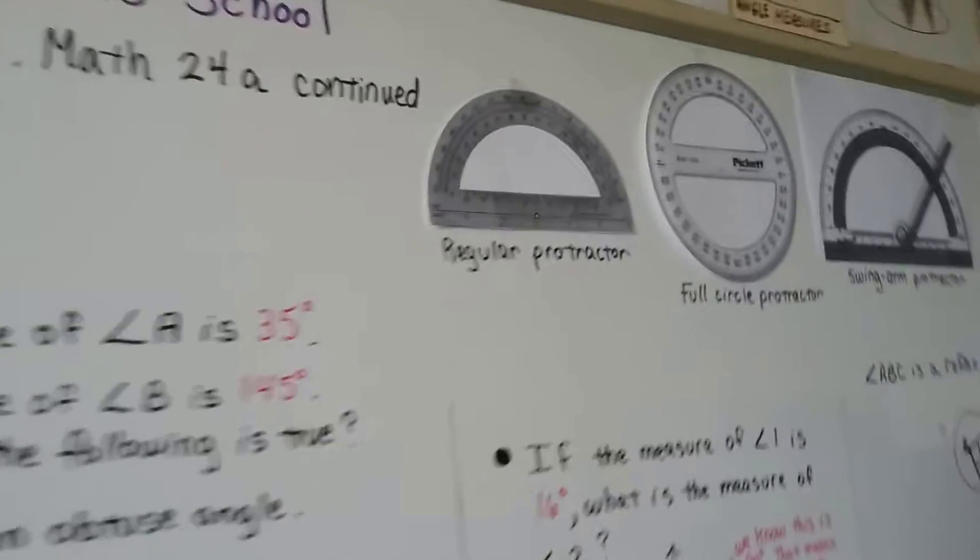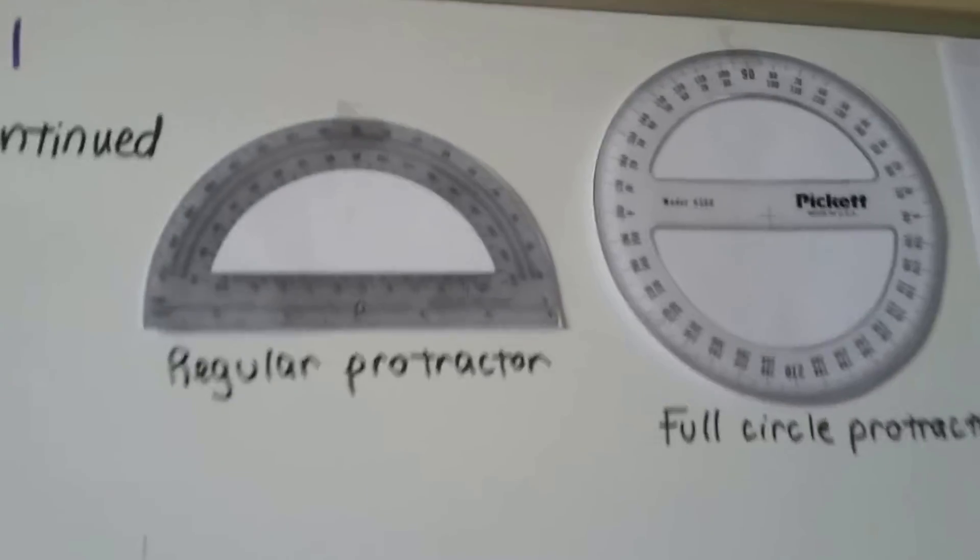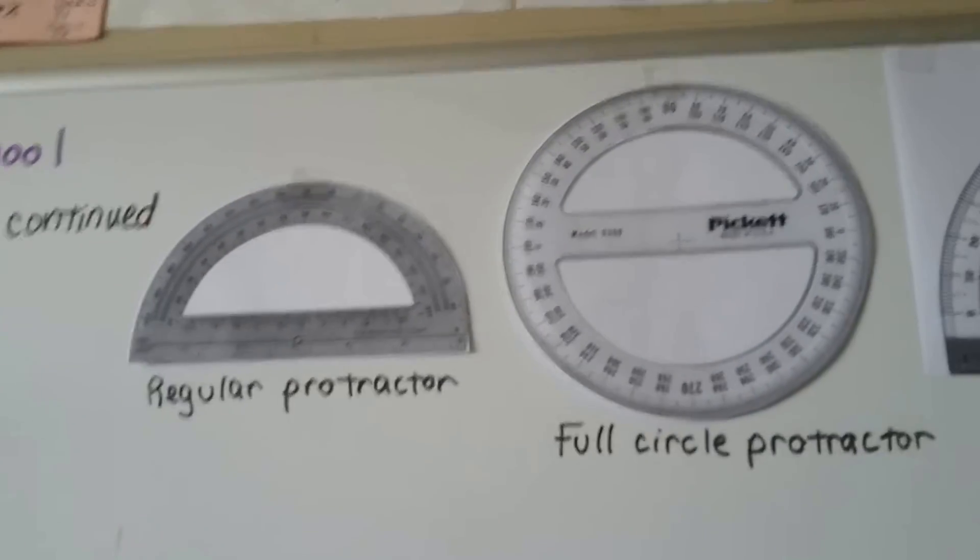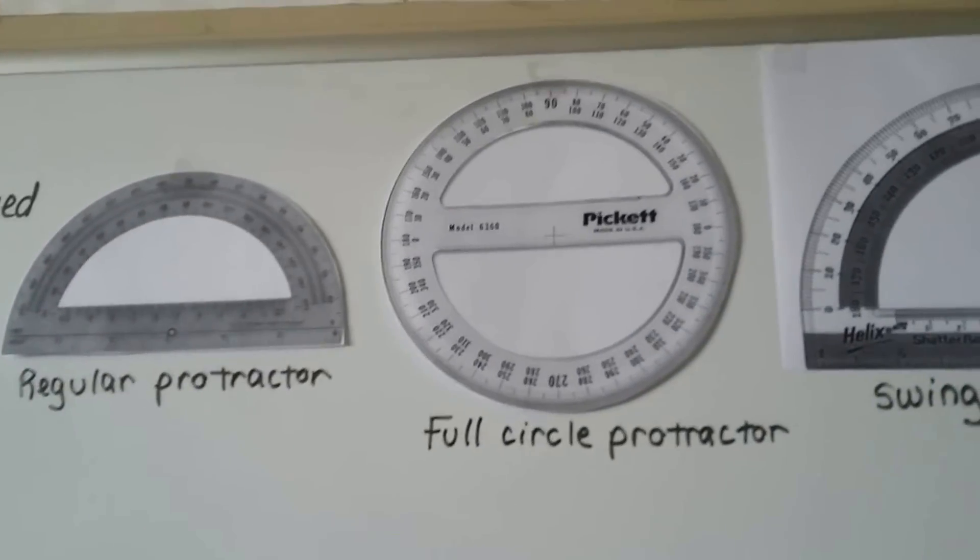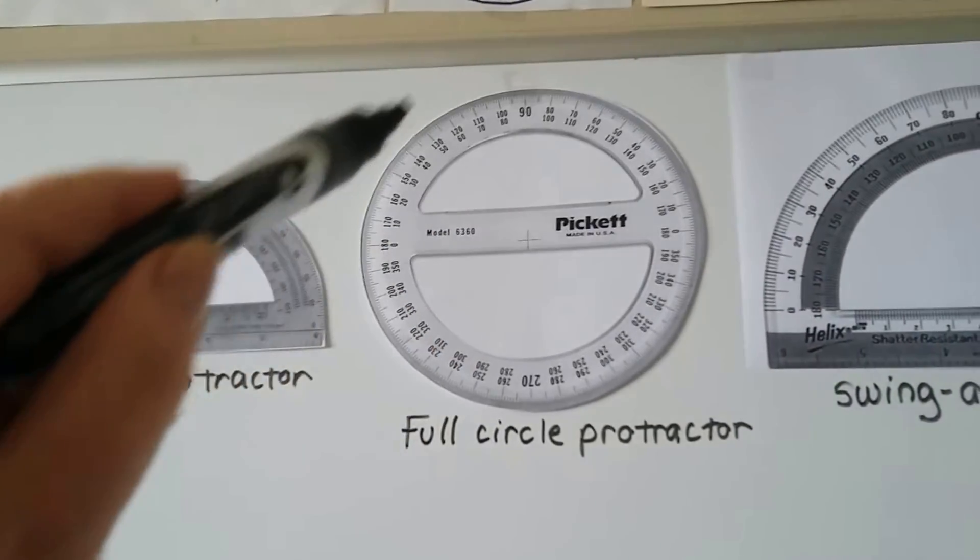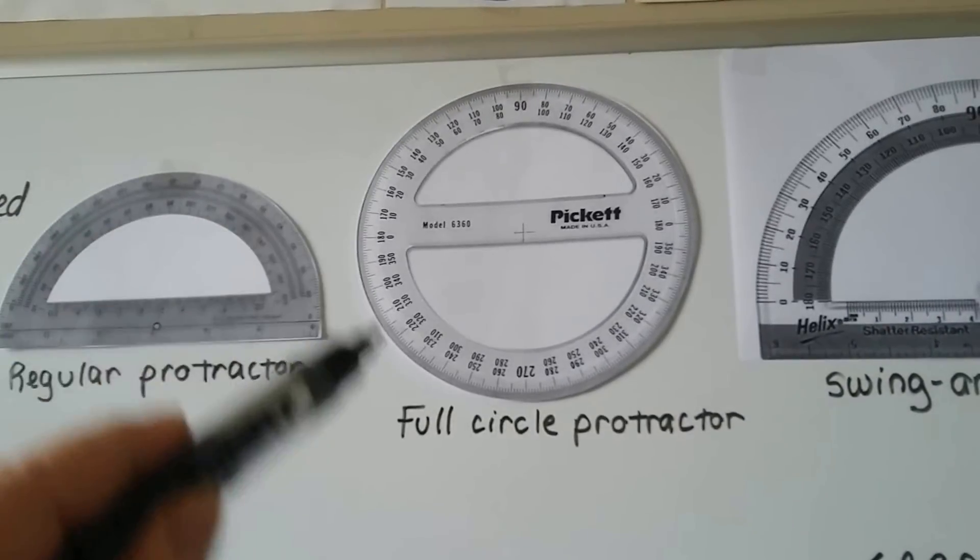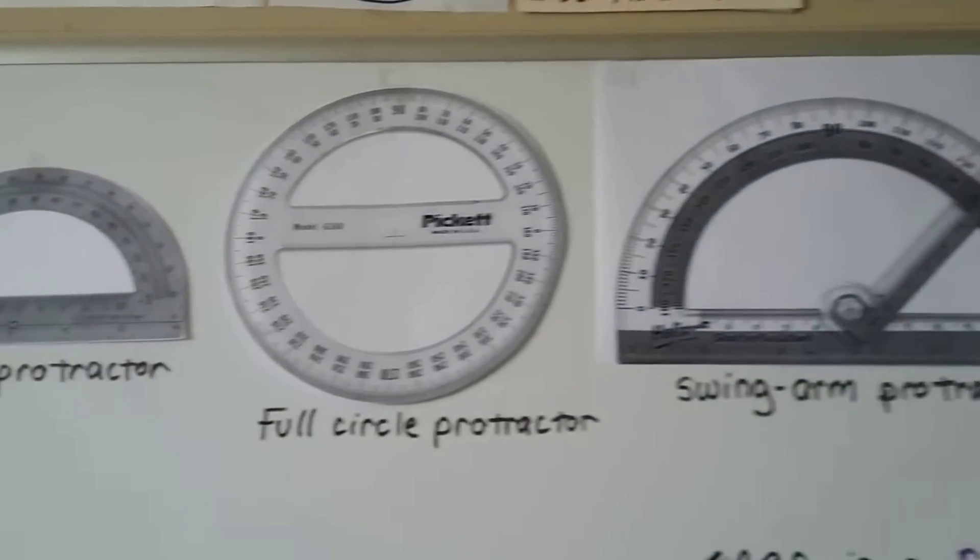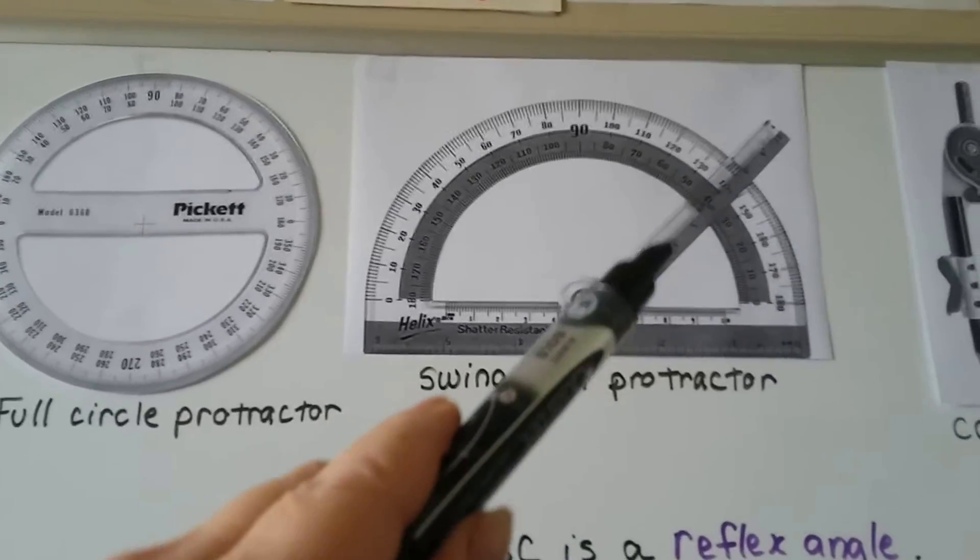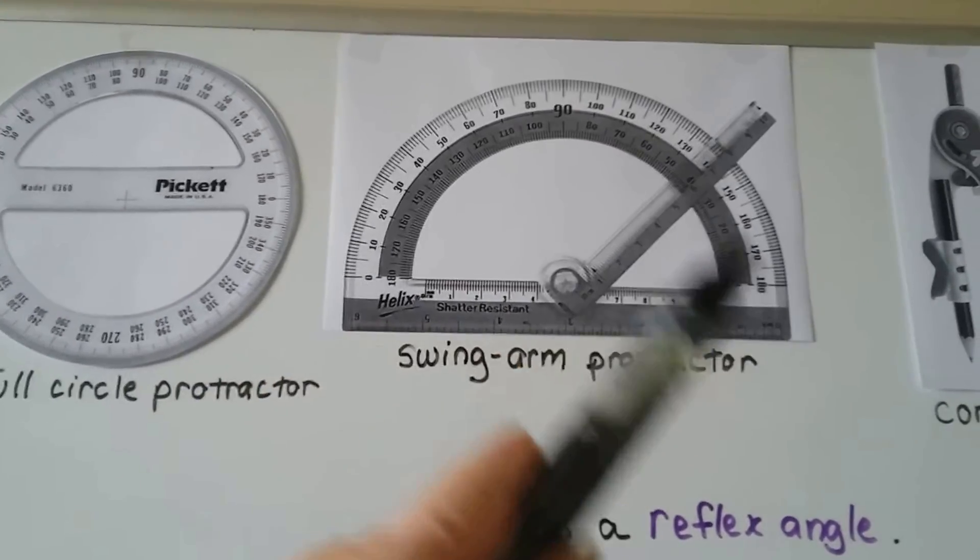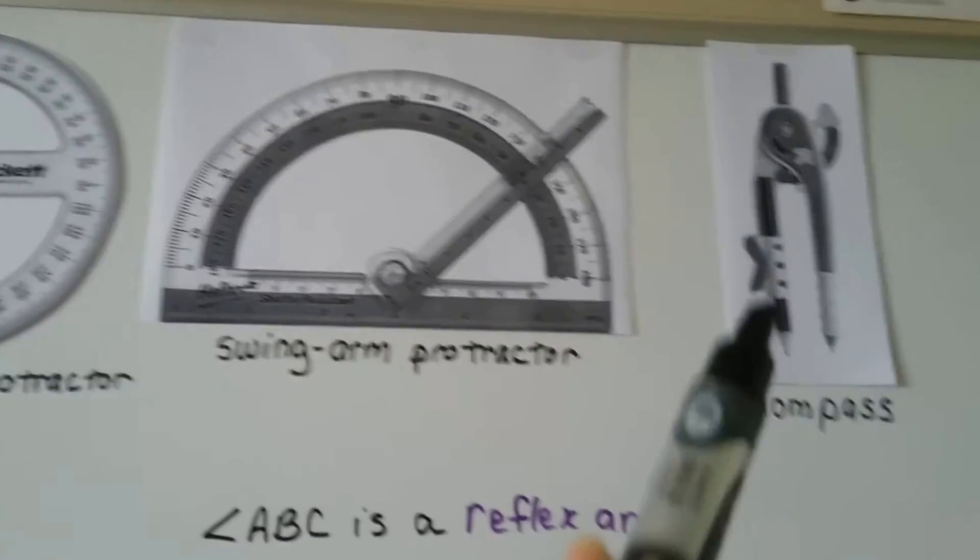So there's all different types of protractors. Here's a regular protractor, and that's what we've been using. And if you don't have one, you should get one so you can play around with it. They also have full circle protractors. That would be great for making those big reflex angles that go past a straight line. And I know art stores have a thing called a swing arm protractor. This arm actually moves to help you draw your angles, and then there's a compass.